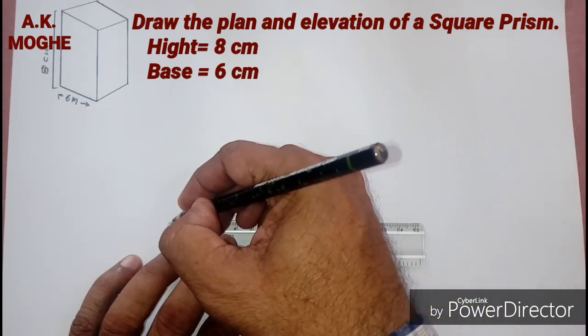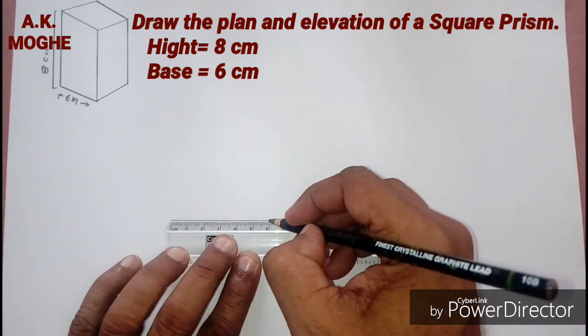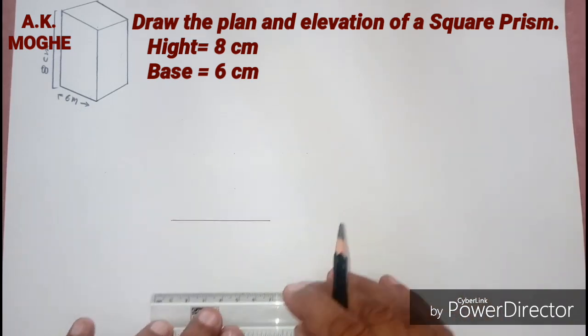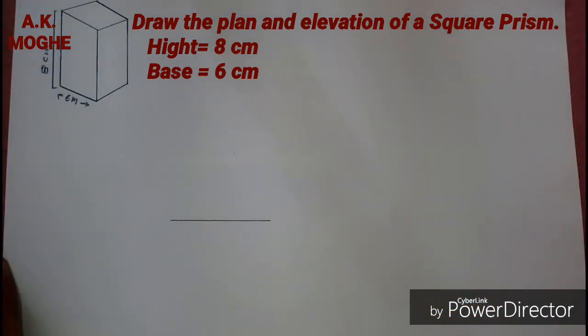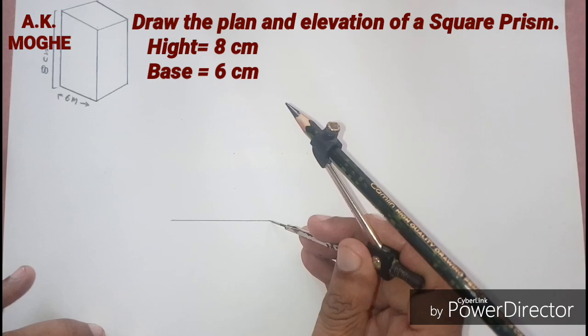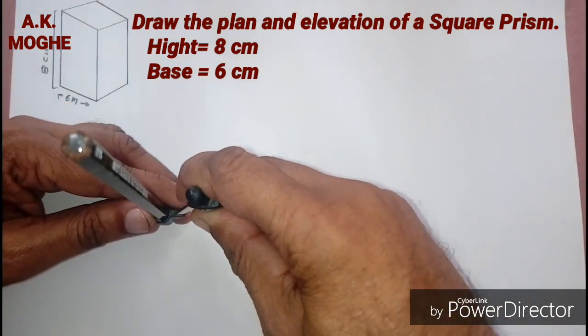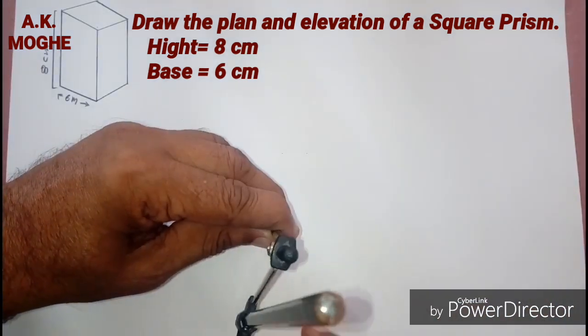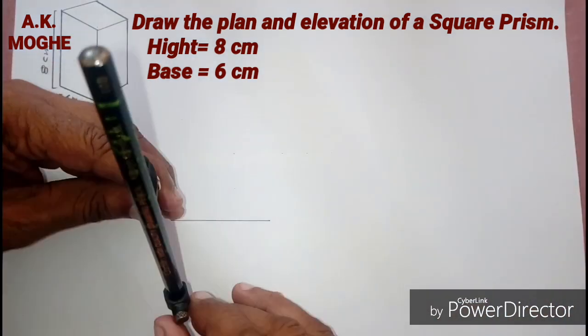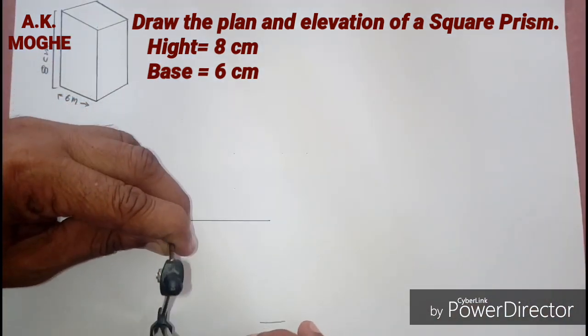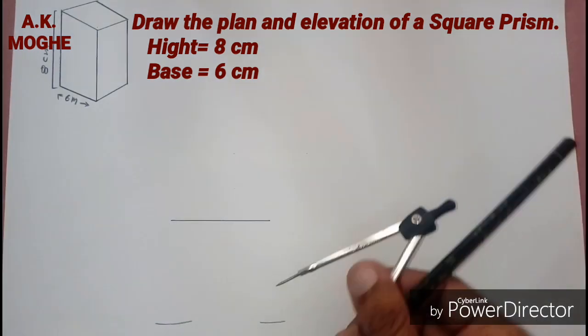Here we are discussing problem number one in solid geometry. It is a problem related to the prism. The prism has two sides, four sides are equal and width are equal. It is a solid cube.